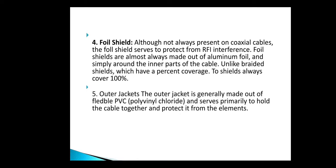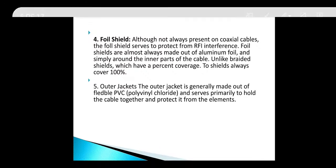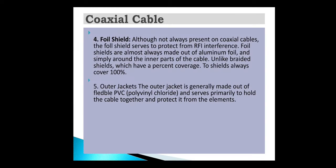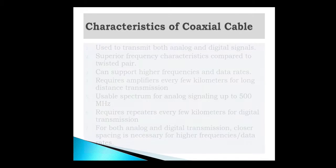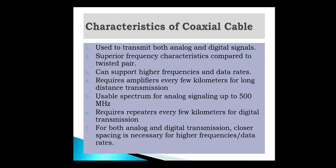Outer jacket. The outer jacket is generally made out of flexible PVC, polyvinyl chloride, and serves primarily to hold the cable together and protect it from the elements. Characteristics of coaxial cable: it transmits both analog and digital signals, having superior frequency characteristics compared to twisted pair cable. It can support high frequency and data rates, and requires amplifiers after every few kilometers for long-distance transmission. Usable spectrum for analog signaling is up to 500 MHz. Closer spacing is necessary for higher frequency or data rates.